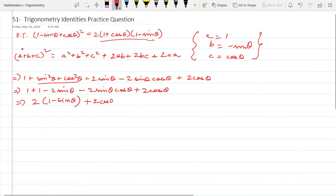what I get is a minus of sin theta plus 1 and this becomes equal to 1 minus sin theta into 2 plus 2 cos theta.